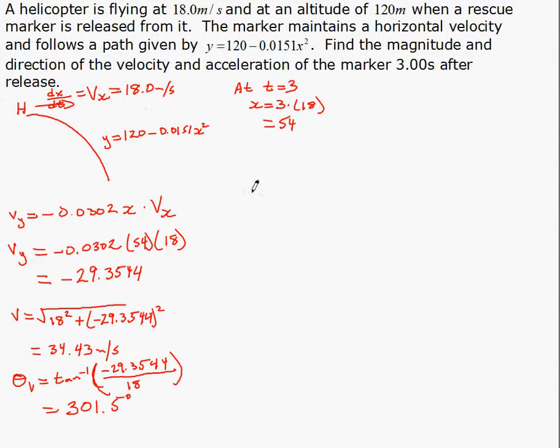Acceleration, the acceleration in the x direction is the derivative of the velocity. So the derivative of 18 is 0. The velocity in the y direction, we solved right here. Remember, this is constant, so we can just leave 18 there.